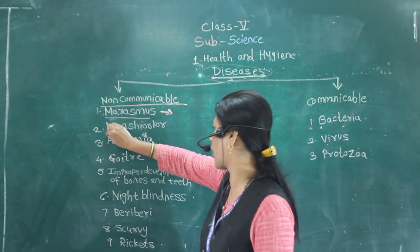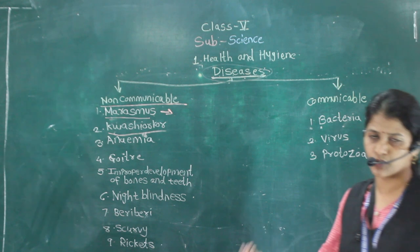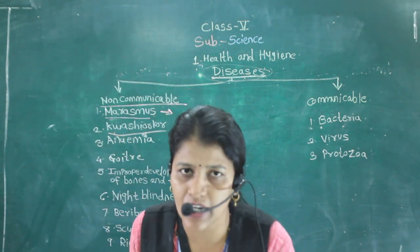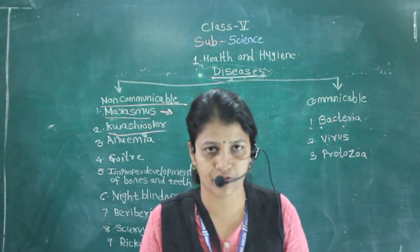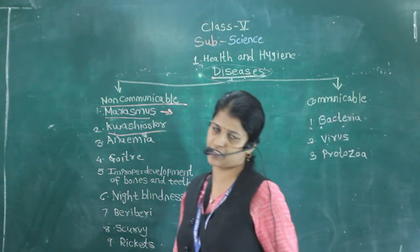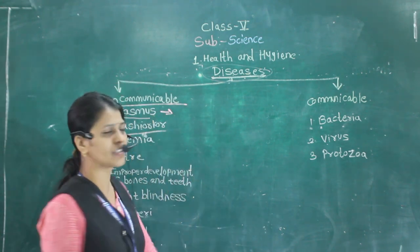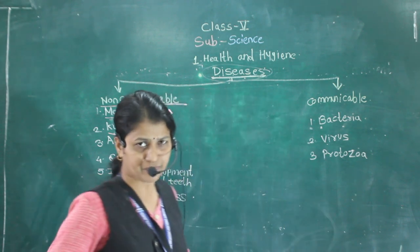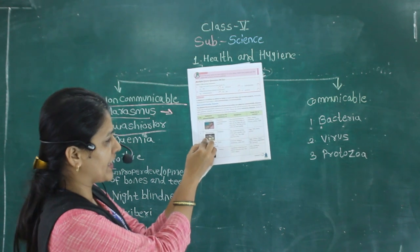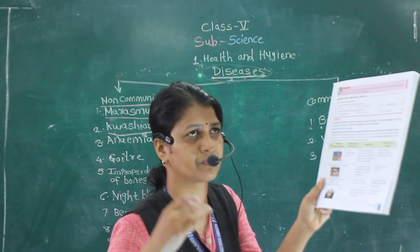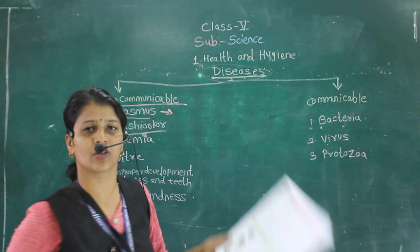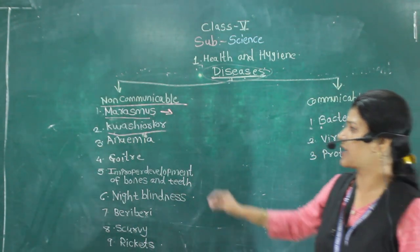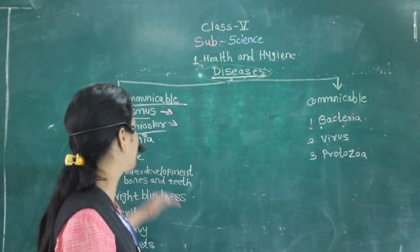Next is kwashiorkor, caused due to the lack of protein. Growing children who do not eat protein-rich food can face this problem. Symptoms include the abdomen getting swollen and bloated while the legs become very thin. The child should be given rich sources of protein such as fish, meat, and egg.